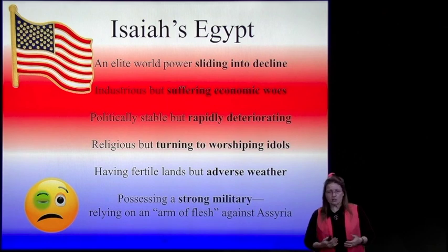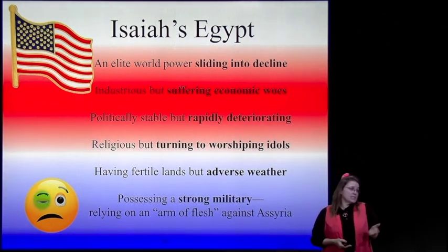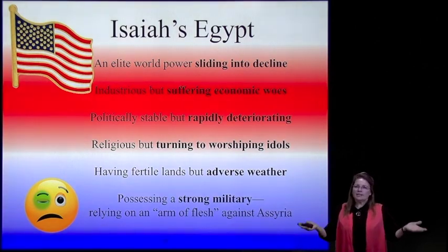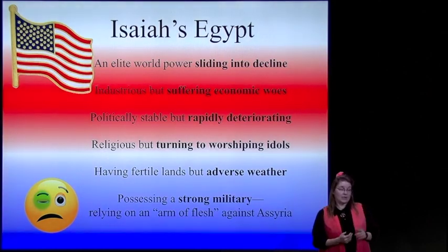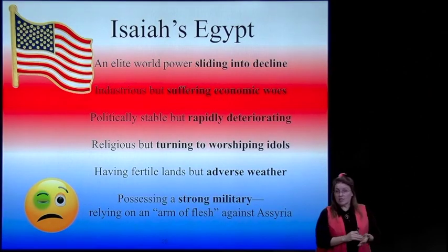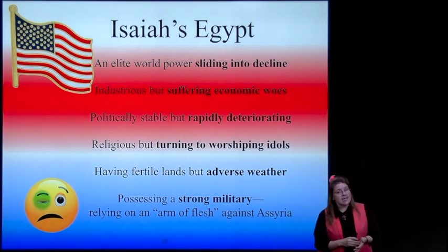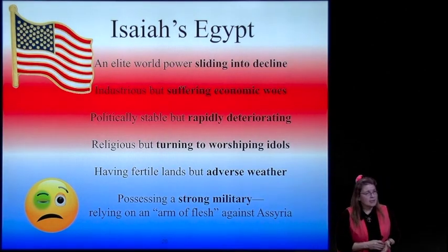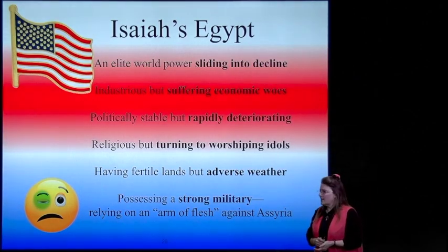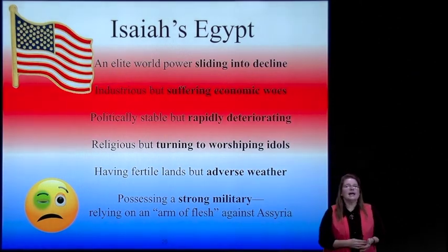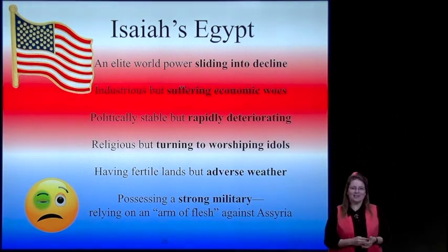Let's look at Isaiah's depiction of Egypt in the end time. Is Egypt stronger than Assyria? An elite world power that is sliding into decline is what we see. It is industrious but suffering economic woes. It is politically stable but rapidly deteriorating. Religious but turning to worshipping idols—these are all phrases pulled out of Isaiah. Having fertile lands but adverse weather—that adverse weather is interesting, we're going to take a look at that in a minute.